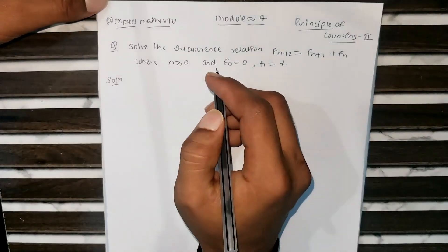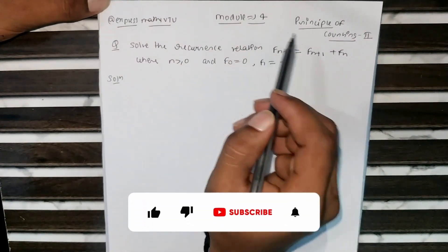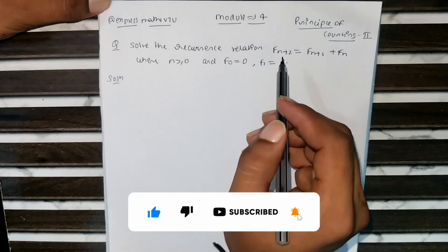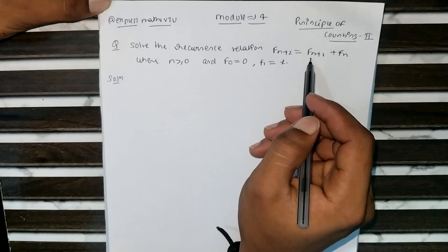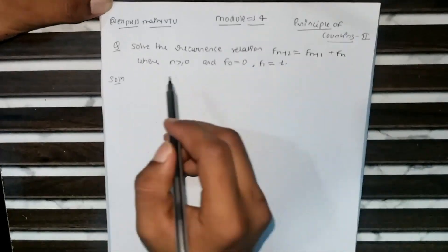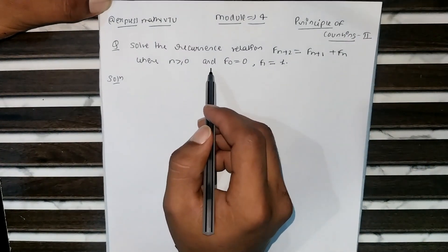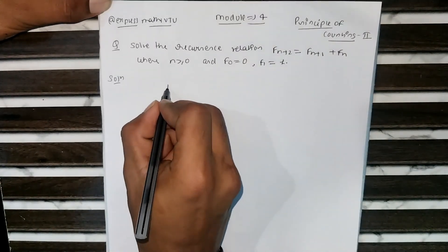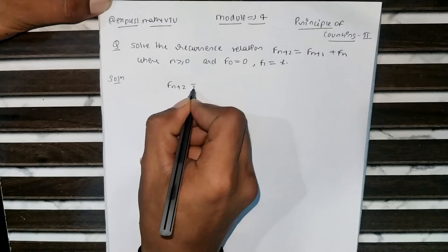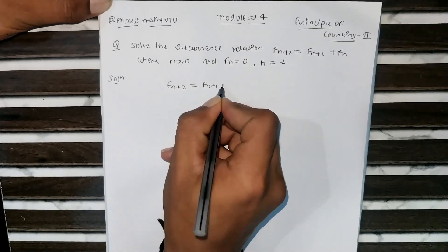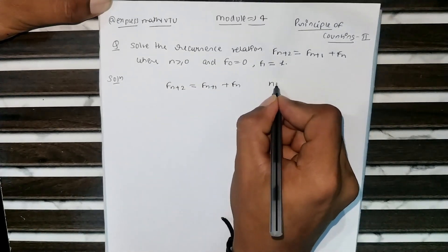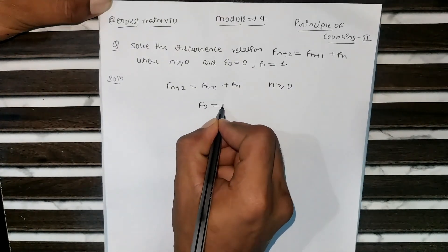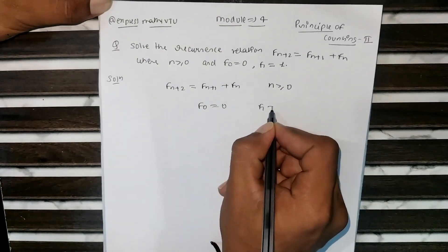Hello everyone. Today we are going to solve another important problem from module 4, principle of counting. The question is: solve the recurrence relation f(n+2) = f(n+1) + f(n), where n ≥ 0, with initial conditions f(0) = 0 and f(1) = 1.